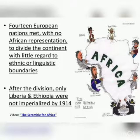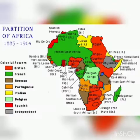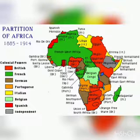The reasons for scramble and partition of Africa can be categorized as follows: economic reasons, social reasons, political reasons, and strategic reasons. Under economic reasons — which were the main reasons — we have: first, the need for raw materials for European industries; and second, the need for a larger market for industrial goods from Europe. Europeans scrambled and partitioned Africa in order to acquire raw materials for their industries.